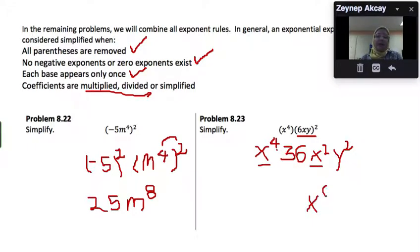So we have x to the 6th. We only have one y factor, which is y squared. So the result will be 36x to the 6th y squared.